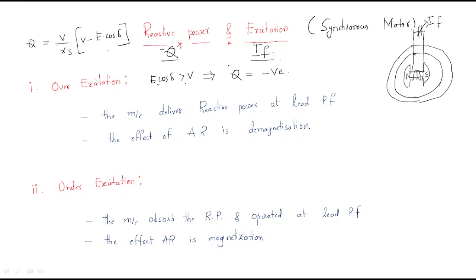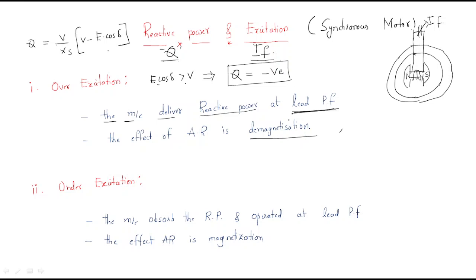Q being negative means the machine delivers reactive power. Whenever Q is negative, the machine delivers reactive power at a leading power factor. If the machine is delivering reactive power, the operating power factor is leading. The effect of armature reaction in this case is called demagnetization.